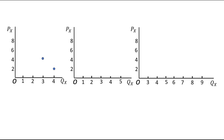At a price of 6 it is 2, this point, and at a price of 8 it is 1, this point. Now you will join these combinations and we will get the demand curve of individual A.